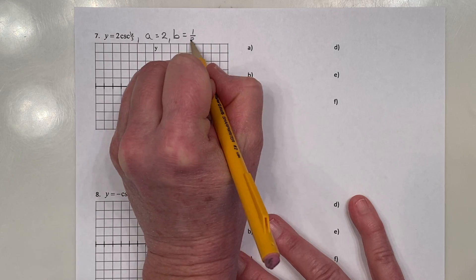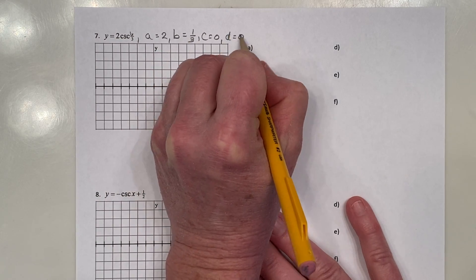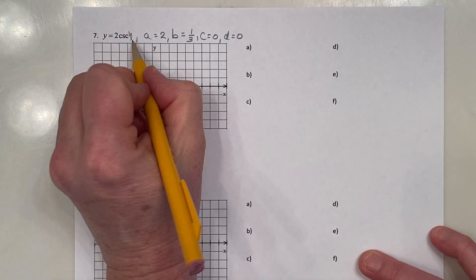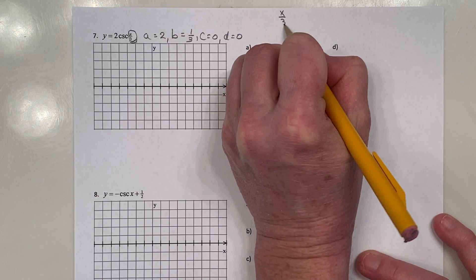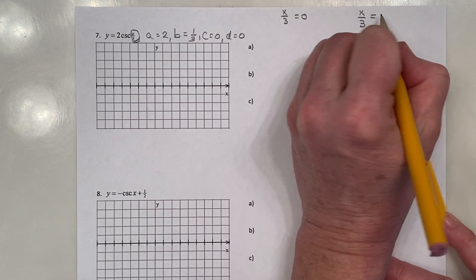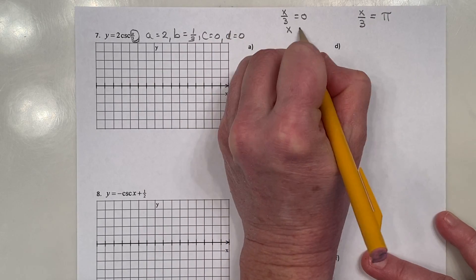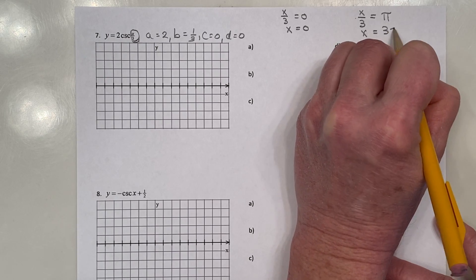B is going to be a third and no C or D. Take Bx minus C. Set it equal to 0 and π. So x over 3 equals 0 and x over 3 equals π. Multiply both sides by 3. Multiply both sides by 3. 3π over here.